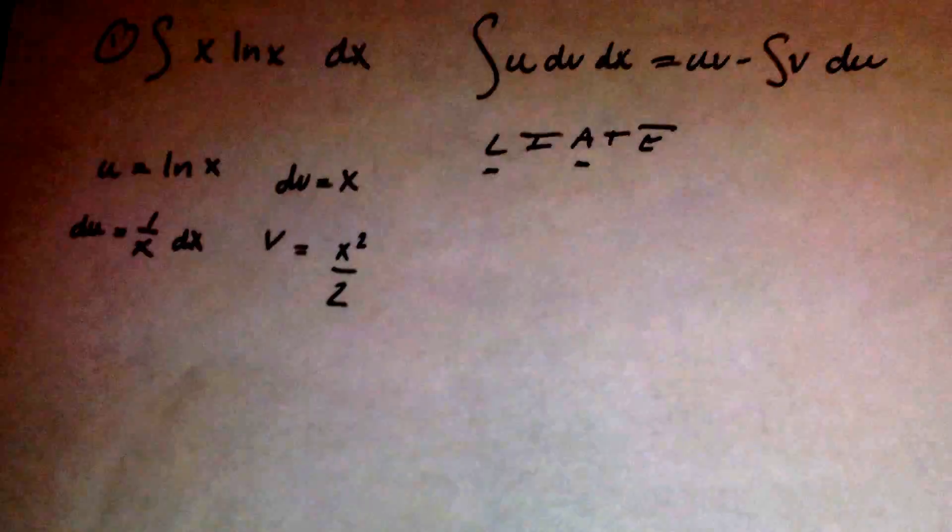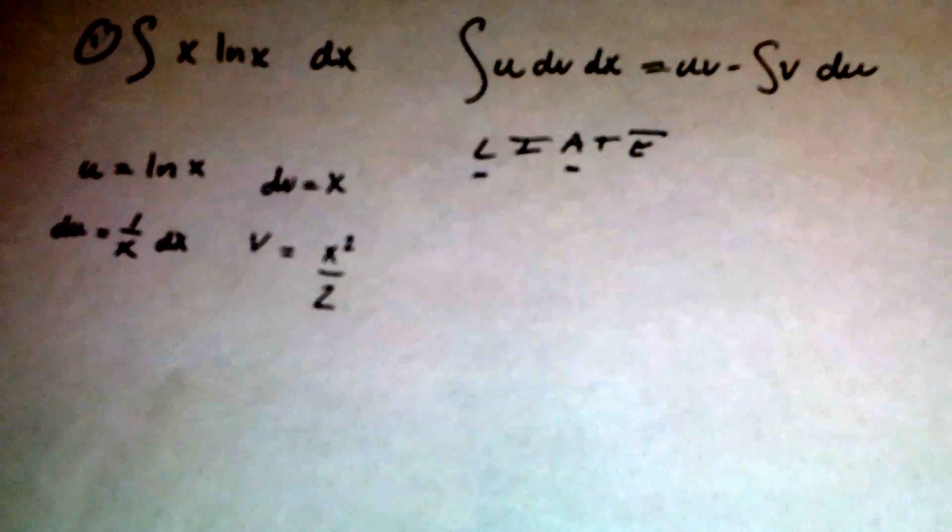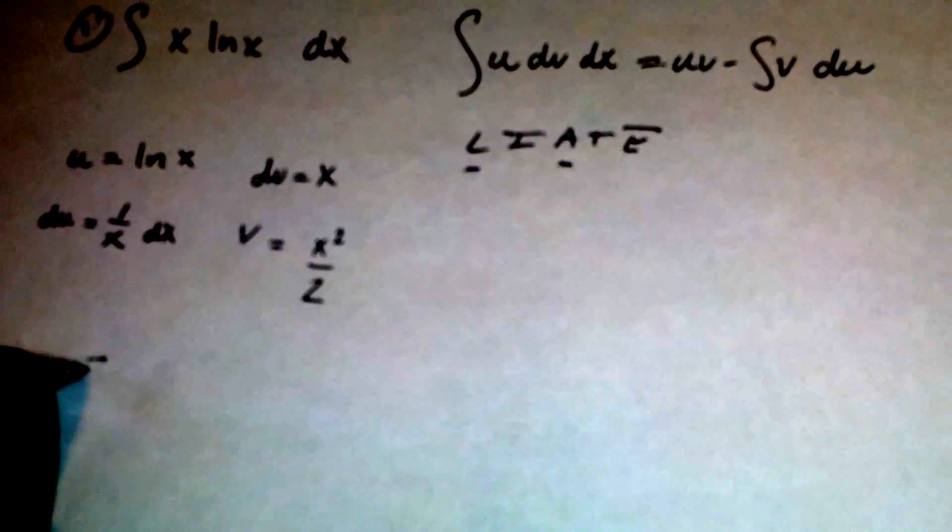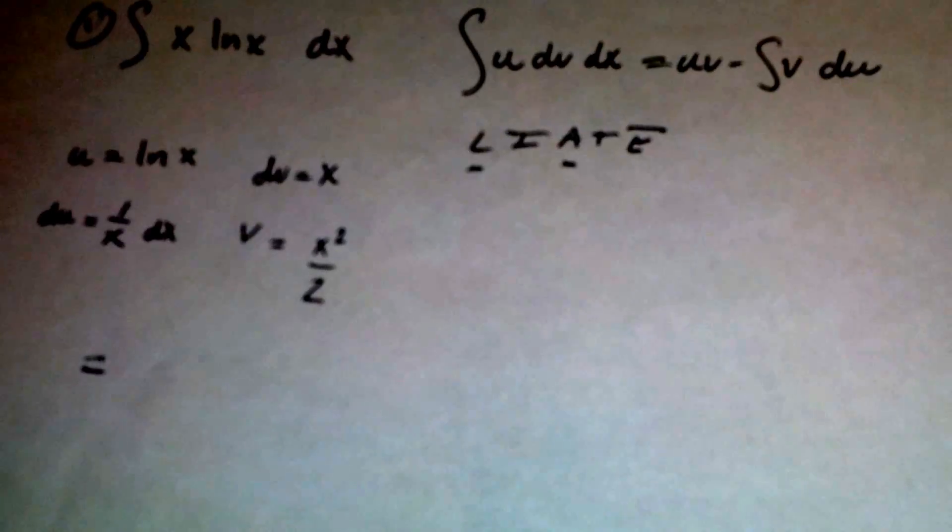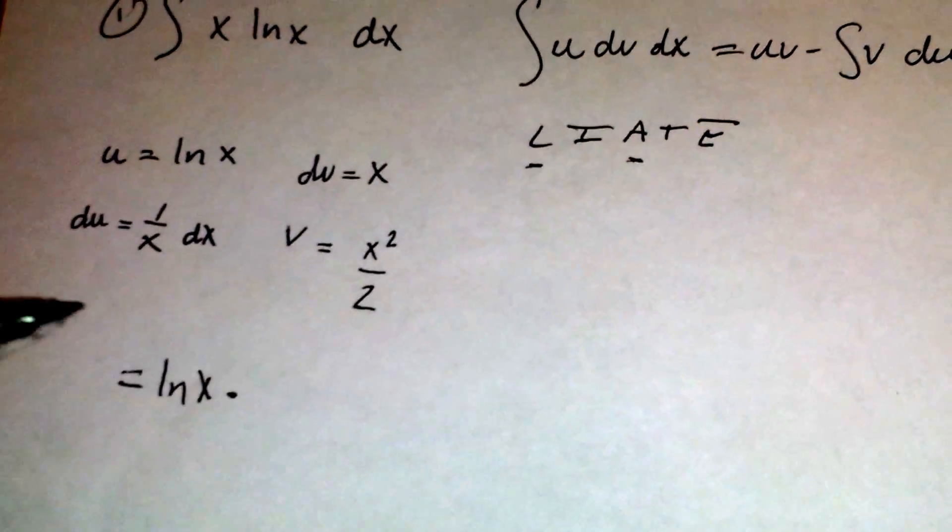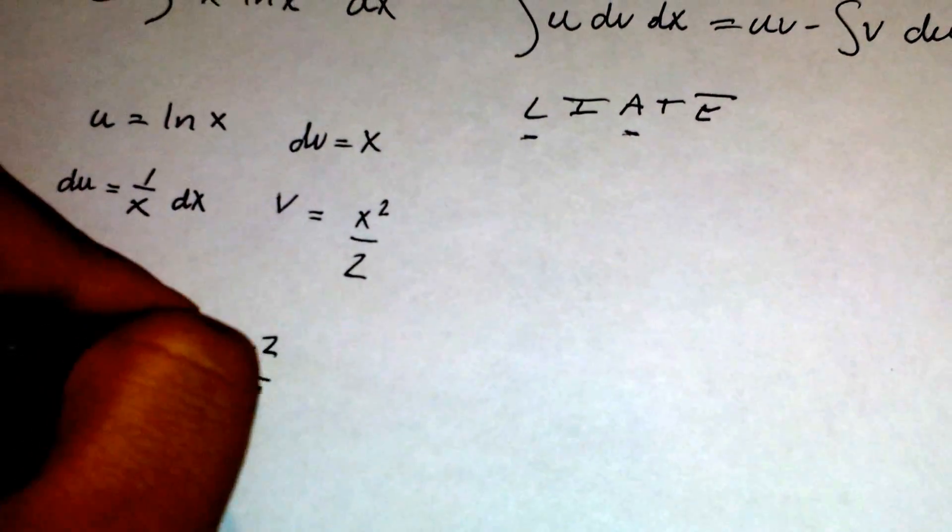Now we have all four variables that we need. The next step is to plug in and simplify. So the integral of x ln x dx equals u times v, where u is ln x and v is x squared over 2,